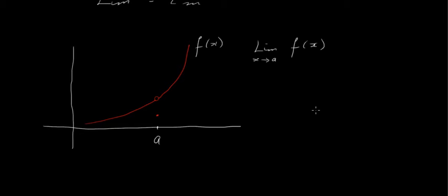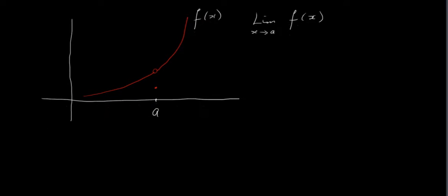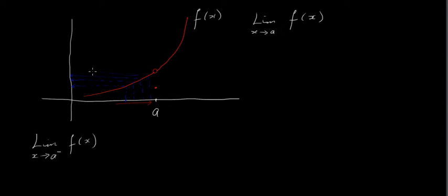The way we work this is we approach 'a' from the left-hand side and from the right-hand side and see if we end up with the same value. Looking at the limit of f of x as x approaches a from the left — written with a negative sign — if we take an x value and move closer and closer to a, we get closer and closer to a particular y value.